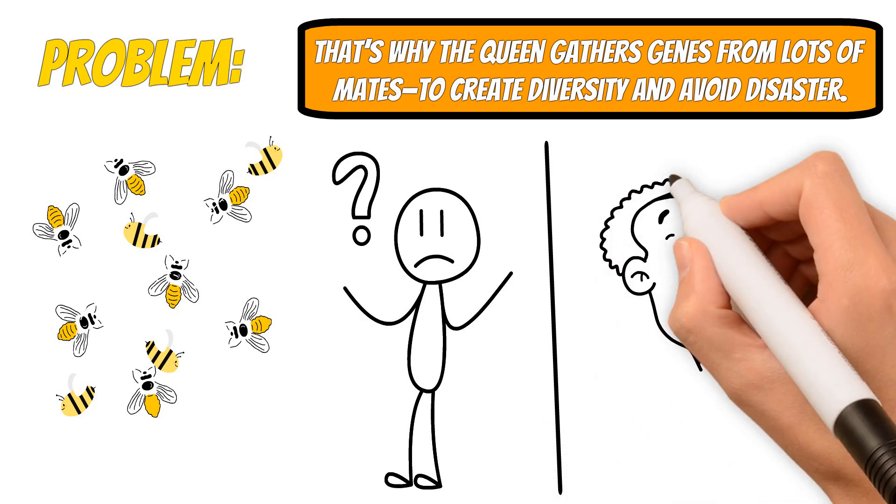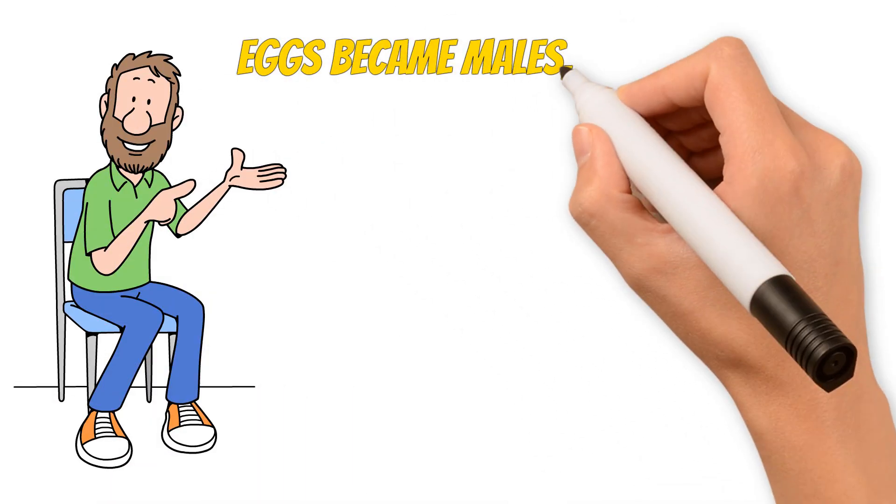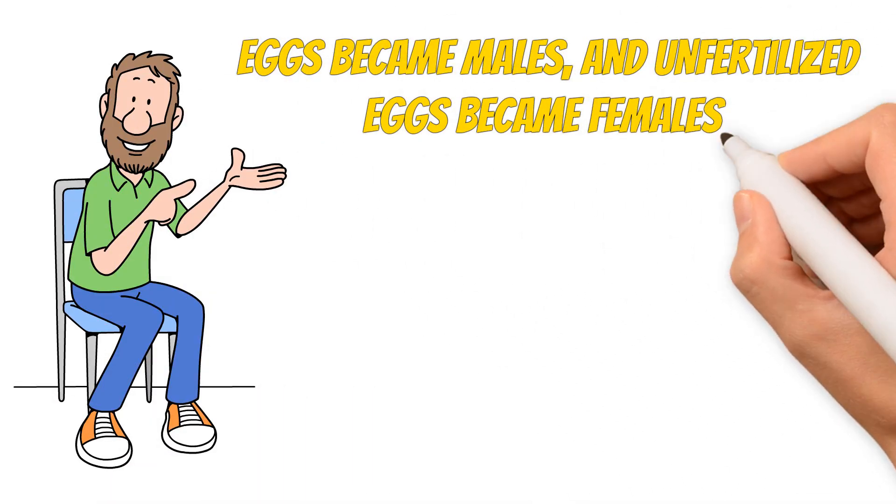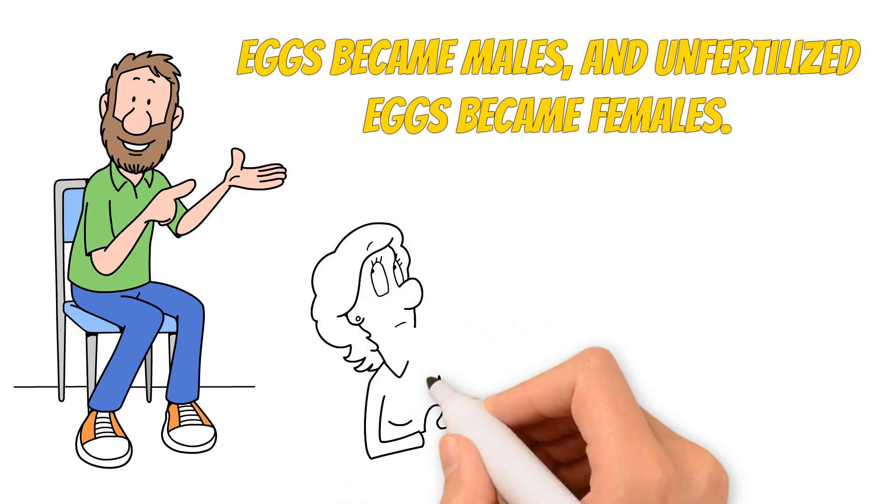But okay, let's imagine we rewrote bee biology. Let's say fertilized eggs became males, and unfertilized eggs became females. Would that allow a king bee to finally exist?